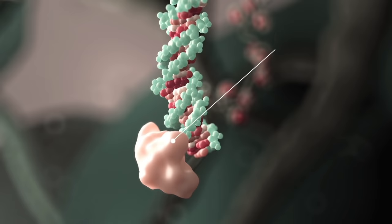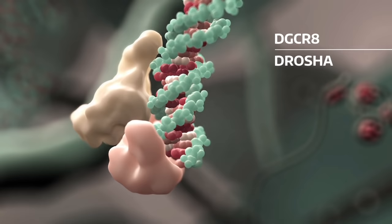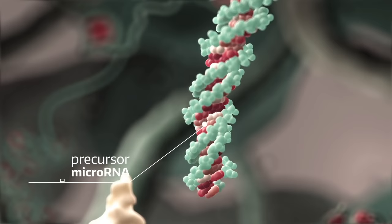First, the double-stranded stem is recognized by the protein DGCR8. An enzyme called Drosha associates with DGCR8 to form a microprocessor complex, which is able to cut the RNA into a smaller precursor microRNA.